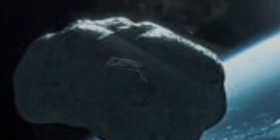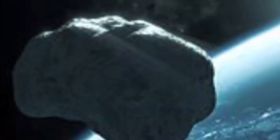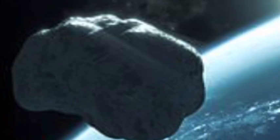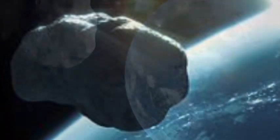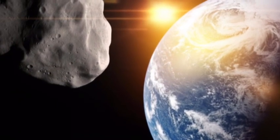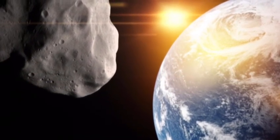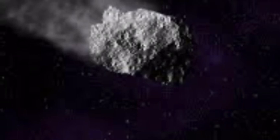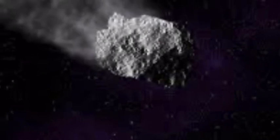2020 TD was first spotted in September this year and observations indicate the object measures 35 to 79 meters in diameter. At the upper limit of the asteroid's size estimate, the object would be about as tall as California's giant sequoia trees, which can grow to heights of around 250 feet.